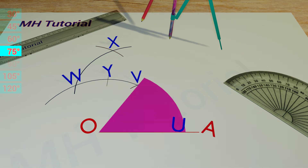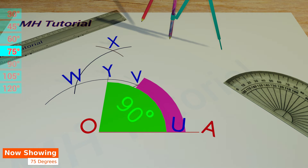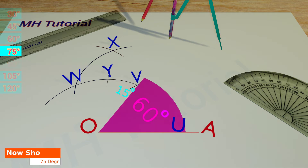Now, if we connect point O and point B, a 60 degree angle will be created. And if we join O and Y, it produces a 90 degree angle. Thus, the angle 75 degree lies between OB and OY. If we bisect the angle VOY, which is a 30 degree angle, we should get a 15 degree angle. 60 and 15 make 75. So, we are now going to bisect the angle VOY.